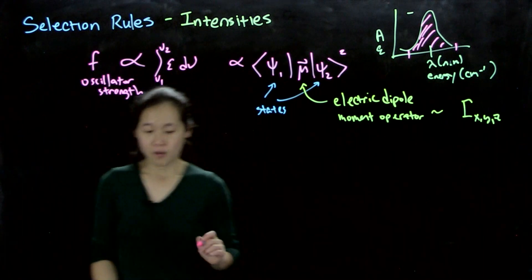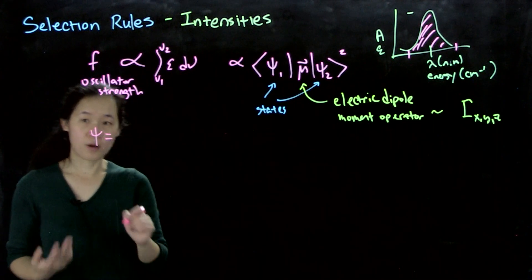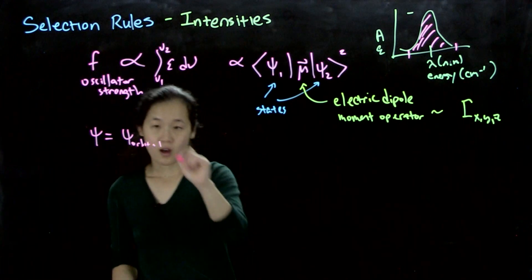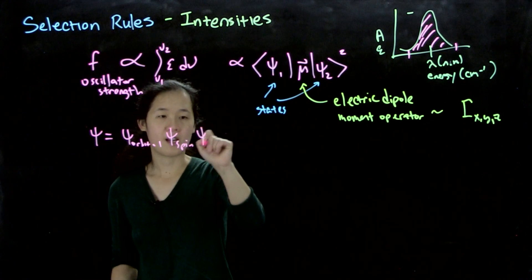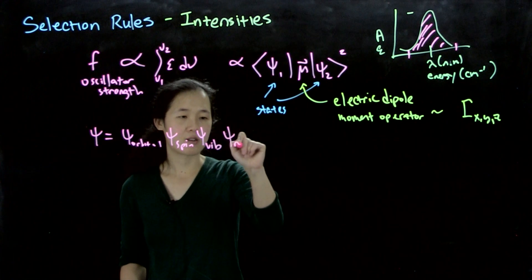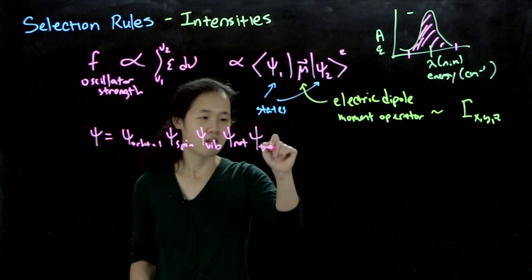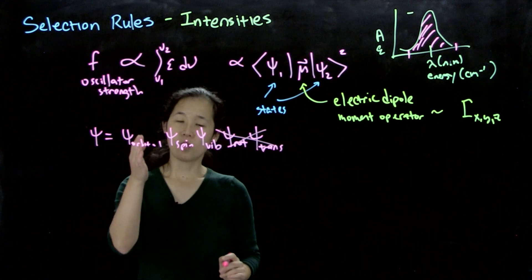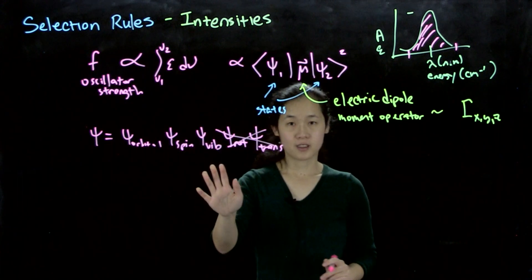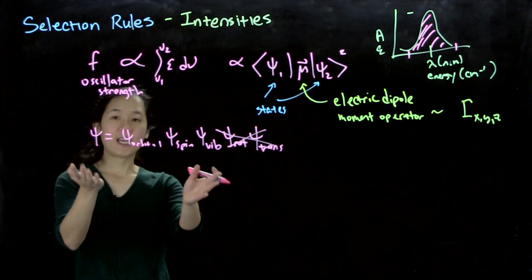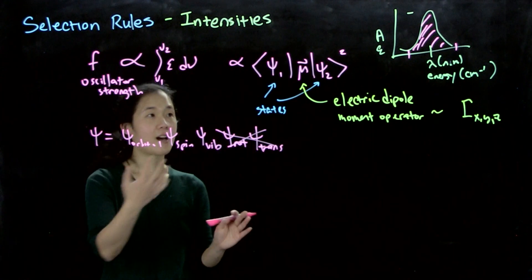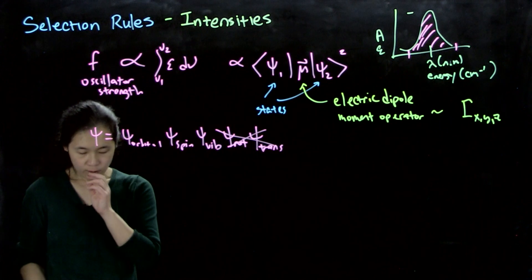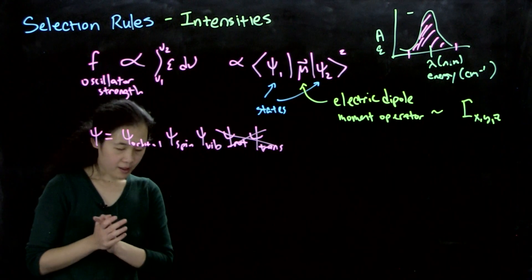To know what the oscillator strength is, you need to know the wave functions of your terms, and that's really hard, because any wave function is a product of multiple components: the orbital wave function, the spin, the vibrational, and also the rotational and translational. For our purposes we'll ignore rotational and translational, so we need to worry about orbital, spin, and vibrational. In principle, we can't easily figure out these functions for a multi-electron, multi-atom molecule, but we can figure out the symmetry.